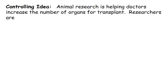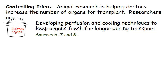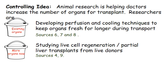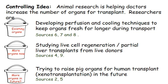My controlling idea is that animal research is helping doctors increase the number of organs for transplant, and they're doing this in three ways: one, by making existing organs last longer; two, by getting more organs by taking some from live transplant donors; and three, in the future, by potentially using pig or other animal organs for human transplant. I've got my controlling idea, I've got three specific examples of research that support it, each one forming a full paragraph, and I've got my sources for each paragraph listed.